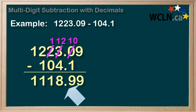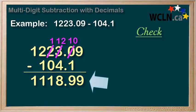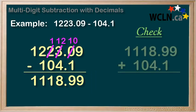Now, of course, we can check our answer with an addition. So if we take our 1118.99 answer and add it to 104.1, let's see what we come up with.